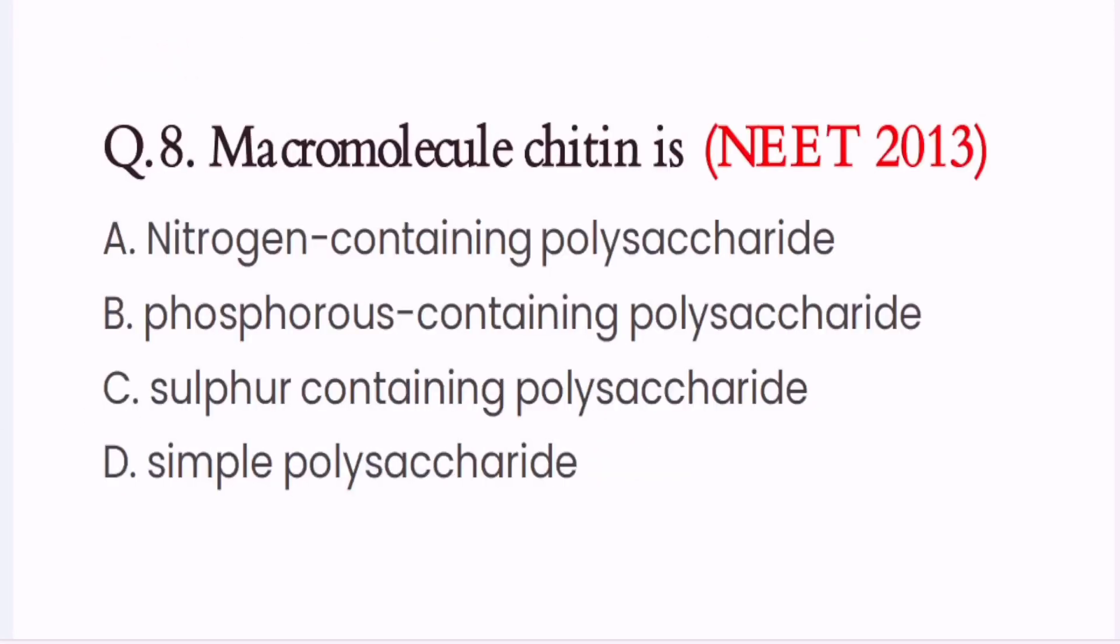Question 8. Macromolecule chitin is: A. Nitrogen containing polysaccharide. B. Phosphorus containing polysaccharide. C. Sulfur containing polysaccharide. D. Simple polysaccharide. So here the correct option is A. Nitrogen containing polysaccharide.